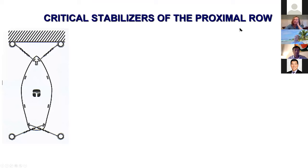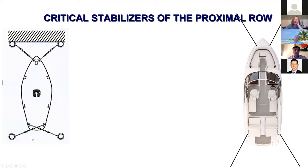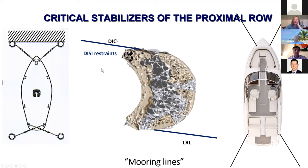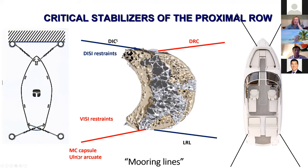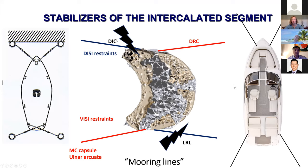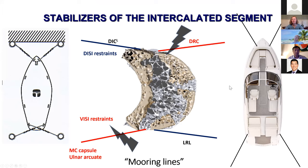Think of this as the entire proximal carpal row as a boat at a mooring. The most stable mooring is with four anchors. The restraints to DISI are the dorsal intercarpal ligament's attachment on the lunate volarly and the long radiolunate ligament. The restraints to VISI are the ulnar midcarpal capsule and ulnar arcuate ligament on one side and the dorsal radiocarpal ligament on the other. Injuries to these respective structures will tip you into DISI or VISI accordingly.